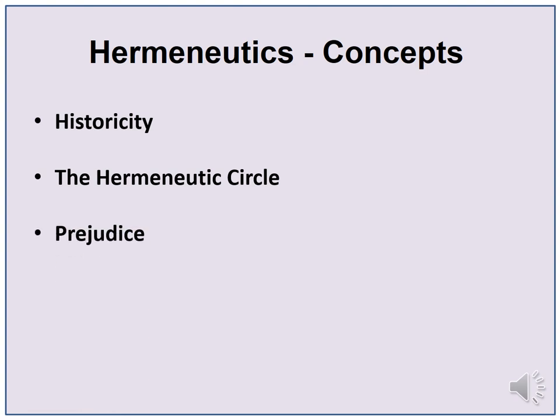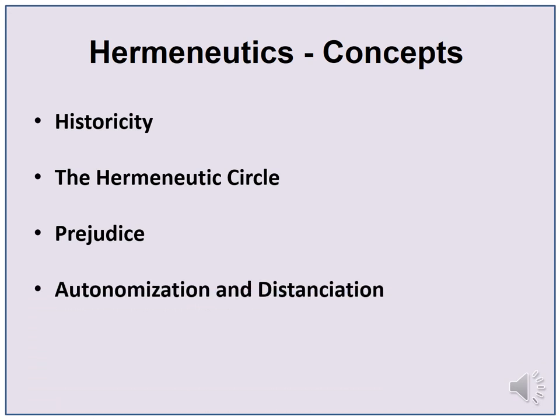Another concept essential to hermeneutics is prejudice. Hermeneutics suggests that prejudice, or prejudgment, or prior knowledge plays an important part in our understanding. The basic idea is that our attempt to understand a text always involves some prior knowledge or expectation of what the text is about. Other concepts are autonomization and distanciation. Autonomization means that the author's meaning, once it is inscribed in a text, takes on a life of its own.